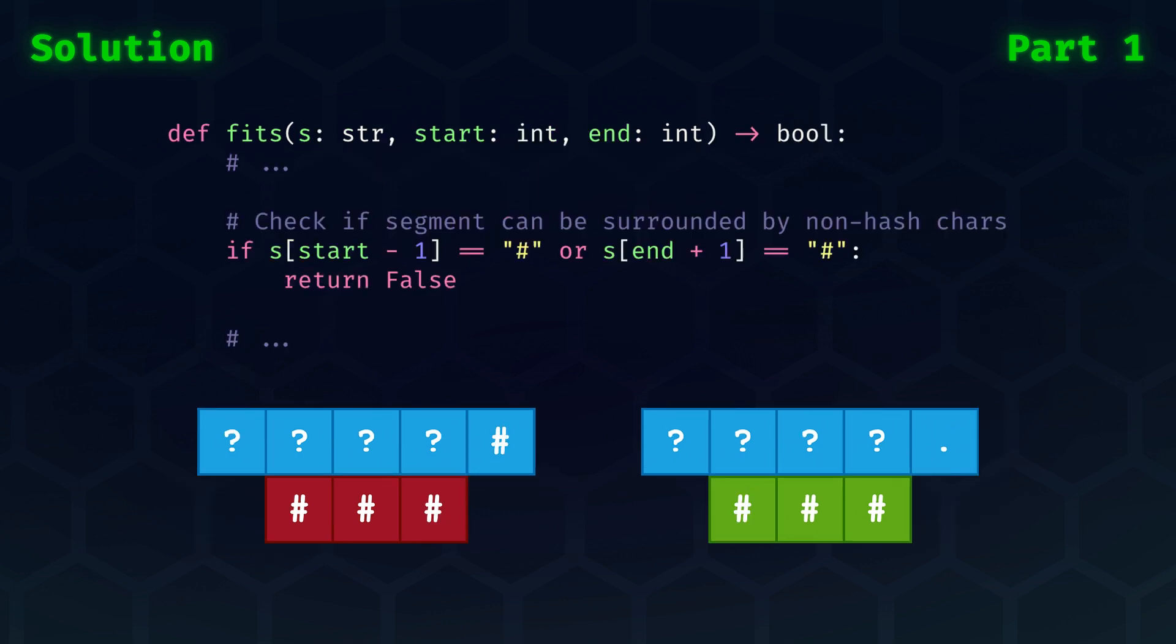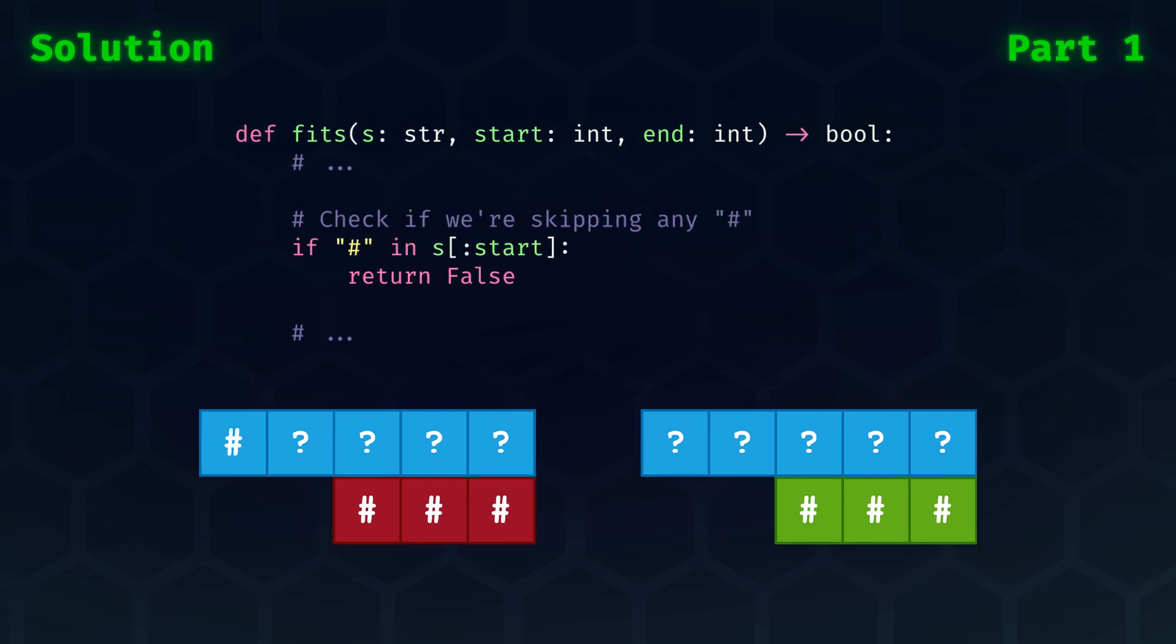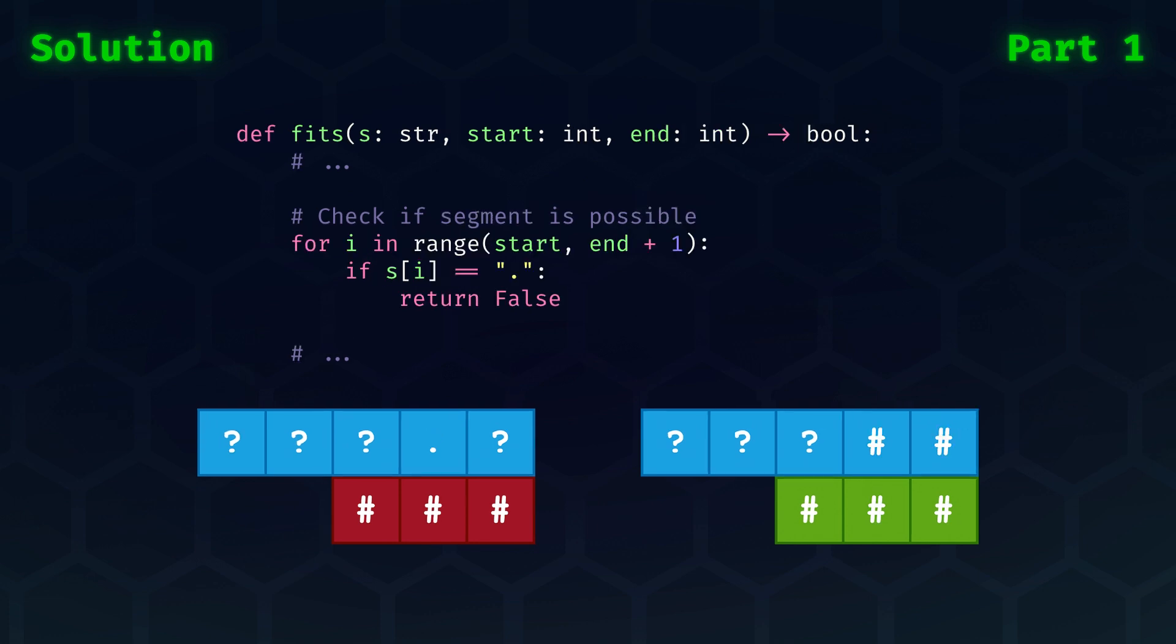Secondly, we need to check if the segment can be surrounded by non-hash characters. This is a requirement as every group must be surrounded by dots. Question marks can, of course, become dots. Thirdly, we must check if placing a group at the current location does not cause us to skip hashes. Doing so would lead to an invalid solution, as every hash needs to be part of a group. Lastly, if all other cases were okay, then we need to see if there are no dots on any of the spots where we try to place the group.